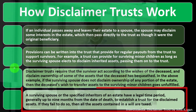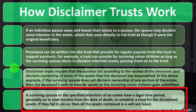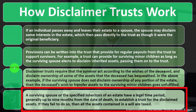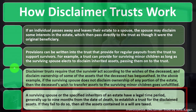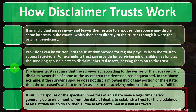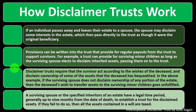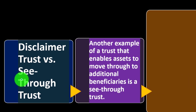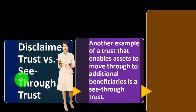A surviving spouse or the specified inheritors of the estate have a legal time period — generally up to nine months from the date of death — to establish a trust for the disclaimed assets. If they fail to do so, then all the assets contained in a will are taxed.